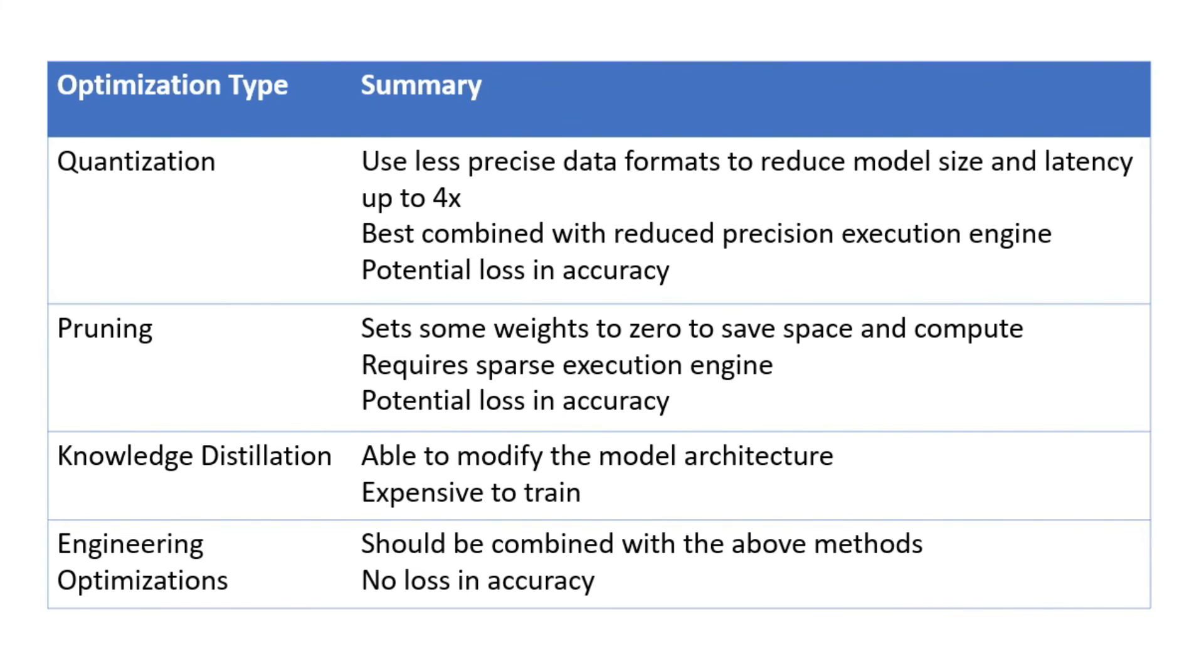Let's summarize what we have covered in this video so far. First, quantization. Quantization uses less precise data formats to reduce the model size and latency. When you're reducing the format from FP32 to INT8, this results in a reduction of 4x. It is best used in combination with a reduced precision execution engine that is able to execute reduced precision formats faster. And a drawback is it can potentially result in a loss of accuracy, although hopefully not too much. Pruning is setting some of the weights of your neural networks to zero to save space and compute. And in order for this to work at all, it requires an execution engine that's capable of executing sparse neural networks. And similar to quantization, it can potentially result in a loss of accuracy.